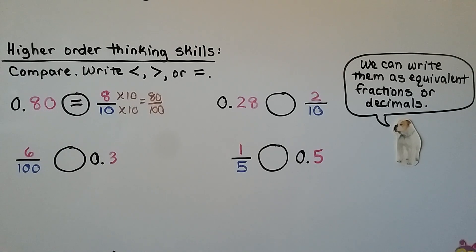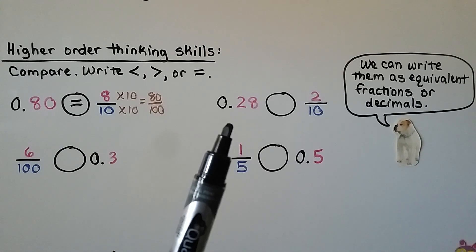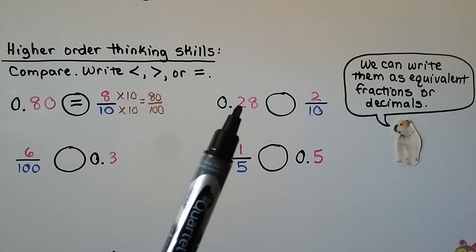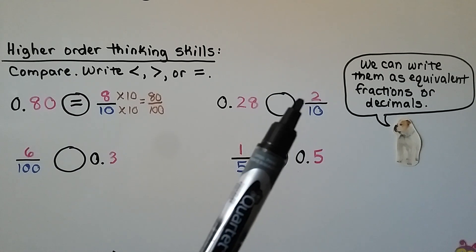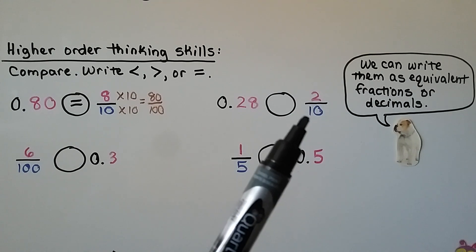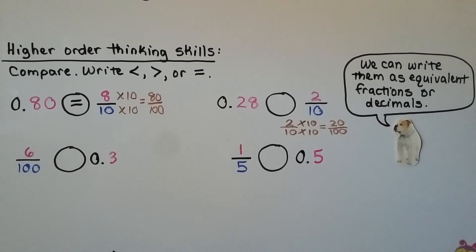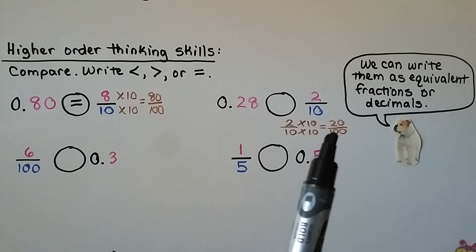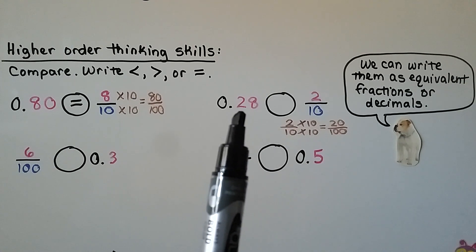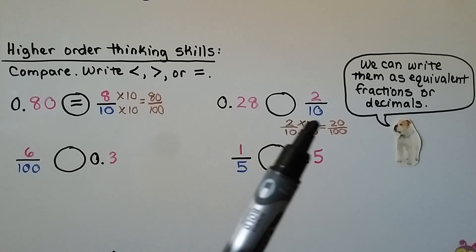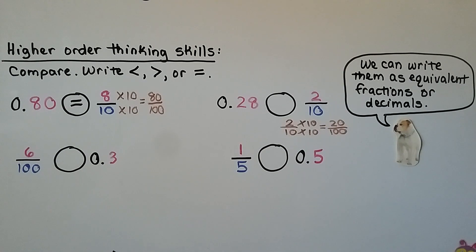We can multiply the numerator and denominator by ten and see that eight tenths equals eighty hundredths. Next, we have twenty-eight hundredths and two tenths. Two tenths has a two in the tenths place; using scratch paper, we give it a denominator of one hundred — multiplying numerator and denominator by ten gives twenty hundredths. Twenty-eight hundredths is greater than twenty hundredths because it has an eight in the hundredths place versus zero.